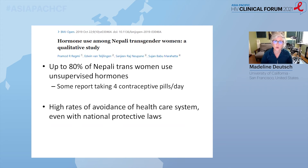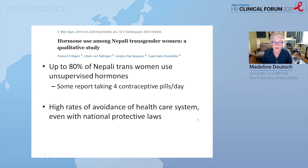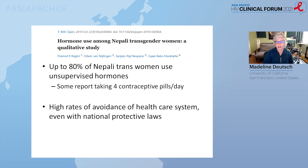A study of hormone use among Nepali transgender women found that up to 80% were using unsupervised hormones, taking up to four contraceptive pills a day, with high rates of avoidance of the healthcare system, even though there are national protective laws on the books in Nepal. Even with legal protections, there are not yet the cultural and structural changes at societal and interpersonal levels that make people feel comfortable accessing clinical care.